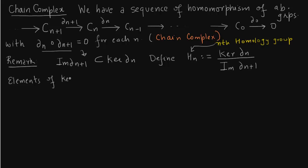So elements of kernel of delta_n are called cycles. Elements of image of delta_n+1 are called boundaries.